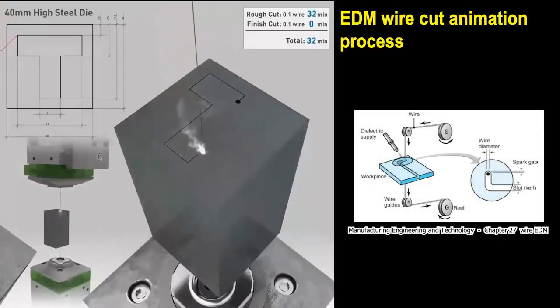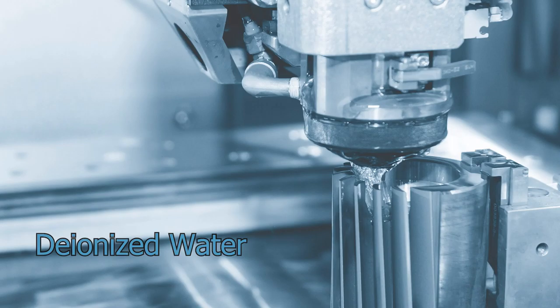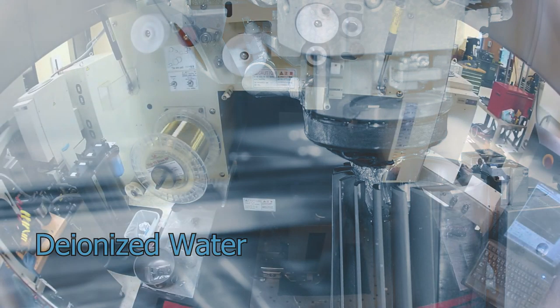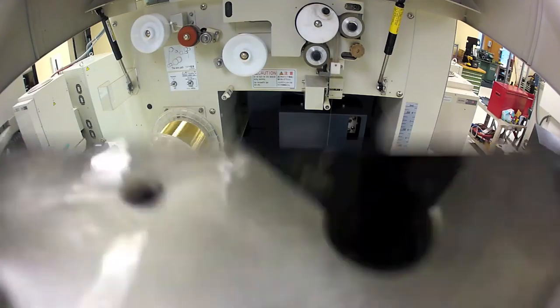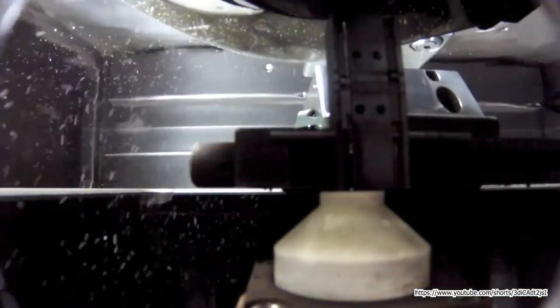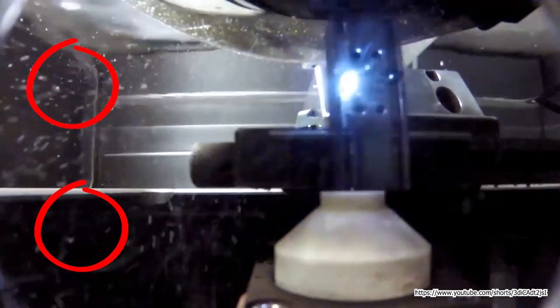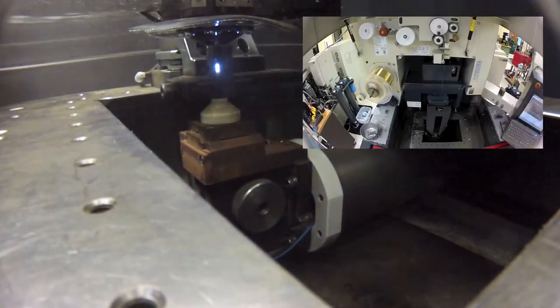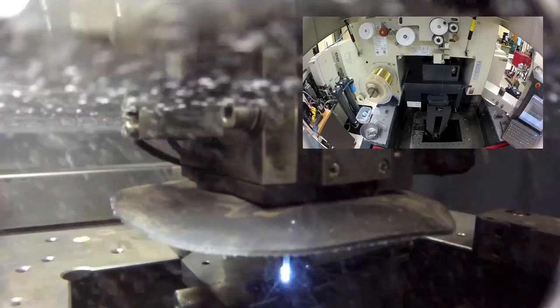The workpiece is submerged in dielectric water. It helps to control the sparking, cool the workpiece, and flush away those tiny dust particles. You can see here some of the dust being flushed away. The removal speed is really fast, about a million sparks per second, and the water is recycled. One more thing: the liquid has low electrical current, so it's safe to touch.